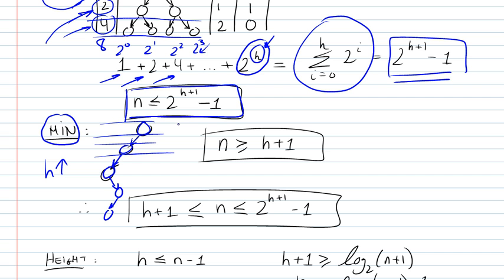So the number of nodes would of course be h plus 1, because we started counting levels at 0, 1, 2. So in this case if we stopped here we would have three nodes. So it's n greater than or equal to h plus 1. So the minimum number is actually h plus 1, and the maximum number is 2 to the h plus 1. So there we've put bounds on our n.